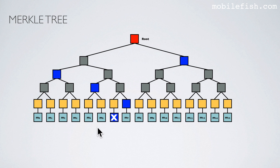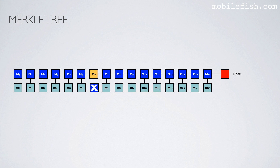A much better solution is using a Merkle tree. Again, Bob gets the root hash from a trusted source. If Alice wants to prove that m6 is not tampered with, she only needs to send m6 and four hashed values to Bob — this hashed value, this hashed value, this hashed value, and this hashed value. With the received information, Bob calculates the root hash value and compares it with the trusted source root hash to check if message m6 is not tampered with. In this example, Alice only needs to provide four hashed values and message m6, compared to 16 hashed values in the previous example.